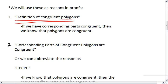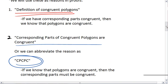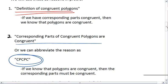The second reason we're looking at is corresponding parts of congruent polygons are congruent, or you can abbreviate this as CPCPC. And what this tells us is that if we know two polygons are congruent...